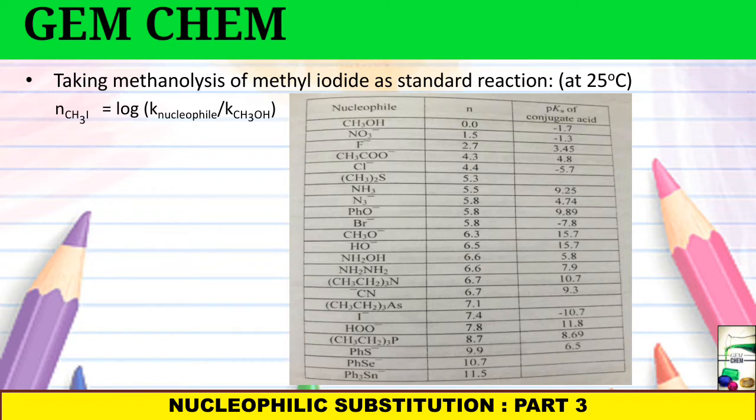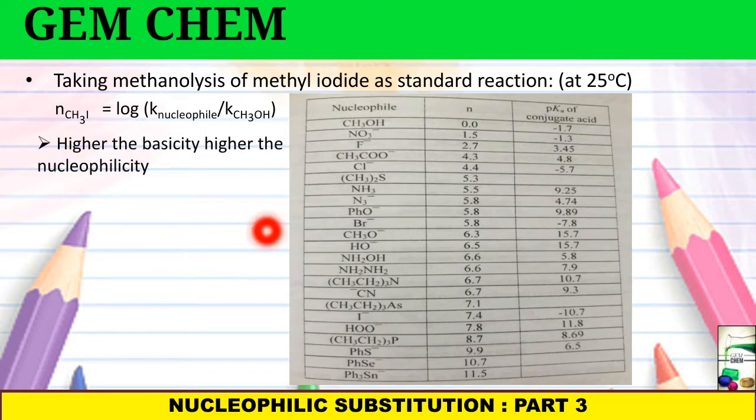Nucleophilicity is basically related with transfer of a pair of electrons just as in case of a base. We have already seen acids and bases. What is the function of base? To transfer pair of electrons. Similarly, nucleophile also does that. But there is a basic difference between nucleophilicity and basicity which you should see. I will give the link in the description box. If you see here, as nucleophilicity is increasing, basicity is also increasing. See here, 1.5, -1.3, 2.7, 3.45. So here, CH3COO- is more basic and its nucleophilicity is also greater. So higher the basicity, higher the nucleophilicity. But this is not always the case. Case varies depending on different factors.